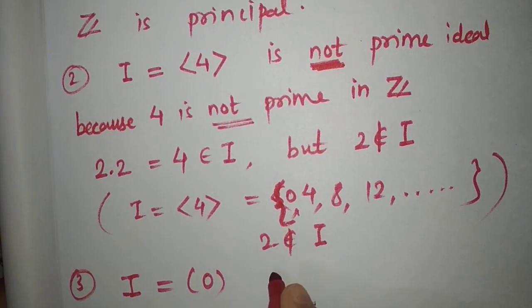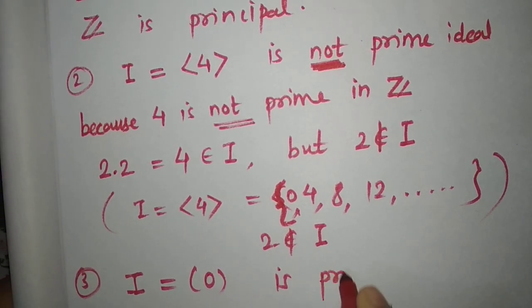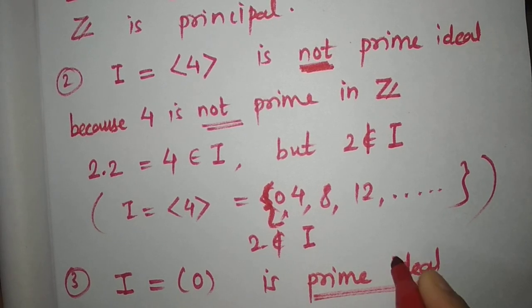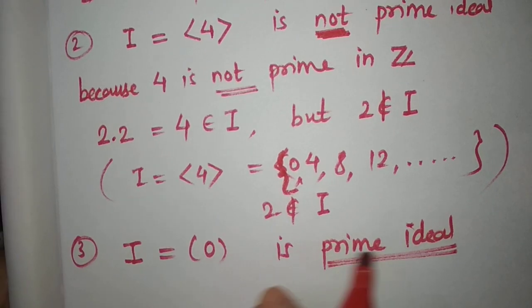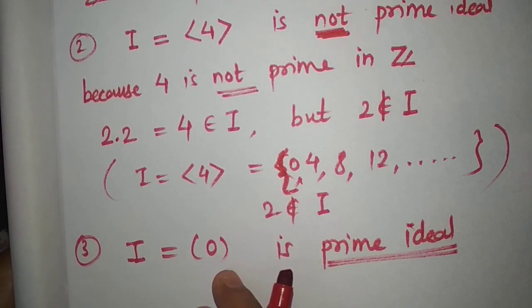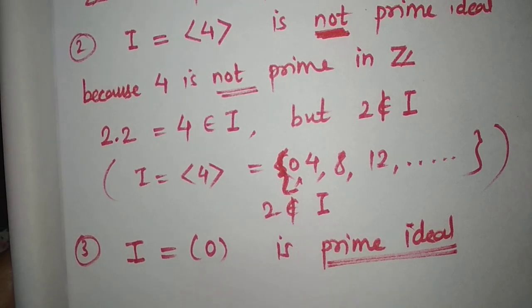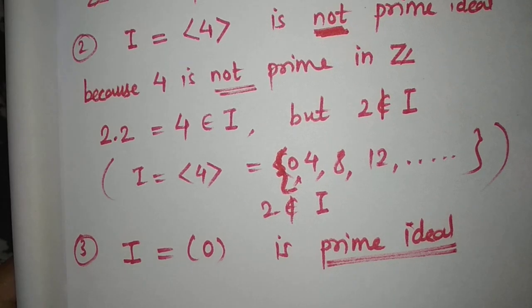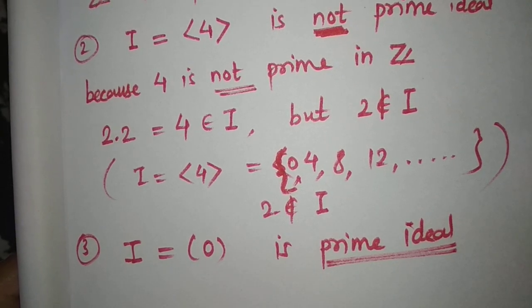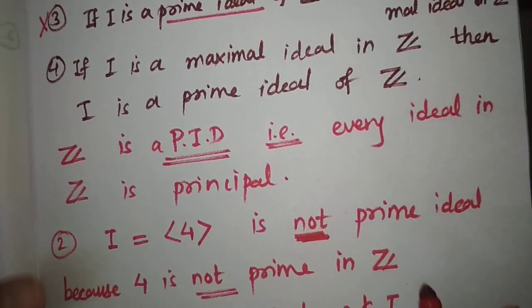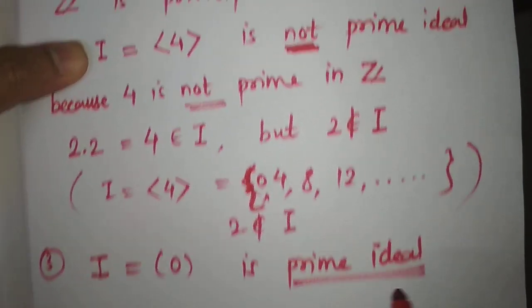Then this is a prime ideal because if you take the product of any two numbers or any two elements in the zero ideal, then it is 0. So this is a prime ideal, and clearly it is not maximal in Z. This zero ideal is a prime ideal but it is not maximal.